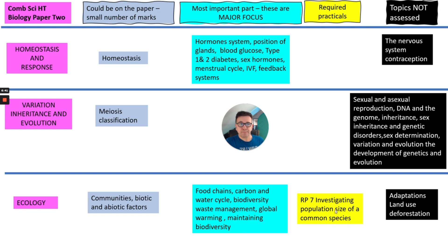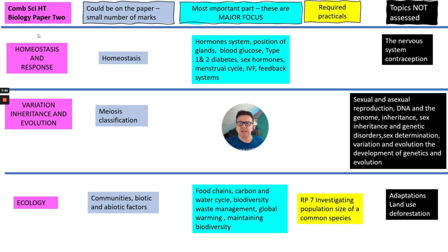The only required practical in Paper 2 they're going to examine you on is using quadrats to estimate populations and transects. There is nothing on adaptations, land use, or deforestation. So you still need to revise quite a big section of ecology and homeostasis and response, but very little in variation, inheritance, and evolution.